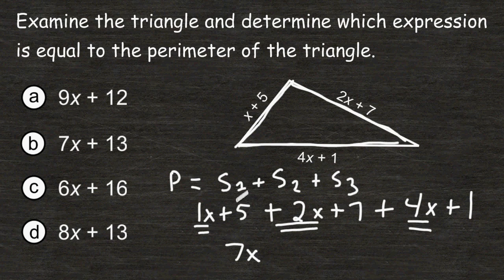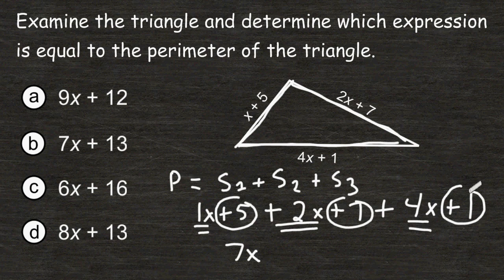Then we take all of our constants and add those together. We have 5 plus 7 plus 1, which is a total of 13. And the choice given that says 7x plus 13 is choice B.